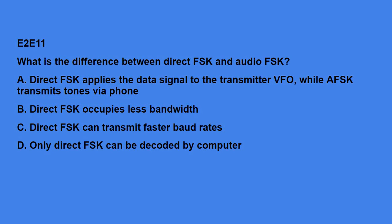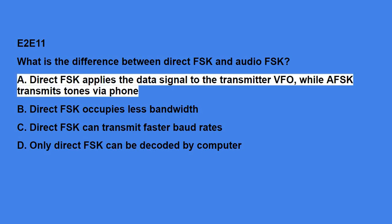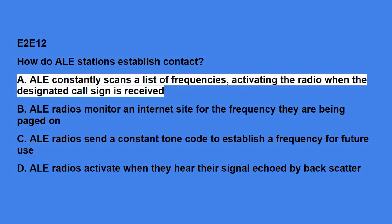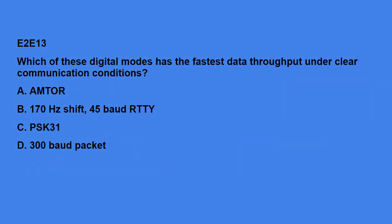E2E11: What is the difference between direct FSK and audio FSK? Direct FSK applies the digital signal to the transmitter VFO, while AFSK transmits tones via phone. E2E12: How do ALE stations establish contact? ALE constantly scans a list of frequencies, activating the radio when the designated call sign is received. E2E13: Which of these digital modes has the fastest data throughput under clear communications conditions? 300 baud packet.